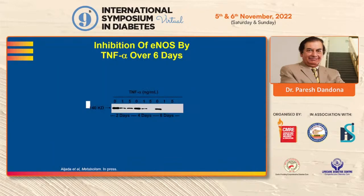Another very important observation: the pro-inflammatory cytokine TNF-alpha, which is involved in all kinds of inflammation including atheroma, causes an inhibition of eNOS — the enzyme that makes nitric oxide.